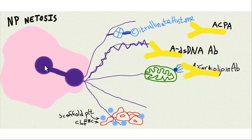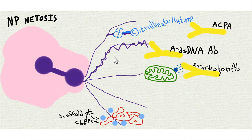NETosis is like a kamikaze attack on whatever they're trying to control. If it's a bacterium, they throw their DNA out of the cell like a net, with a bunch of chemicals attached to it to immobilize the bacterium. The suffix '-osis' means death.